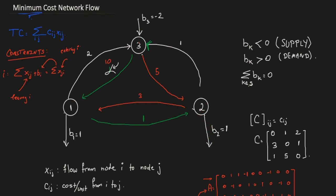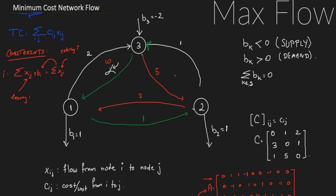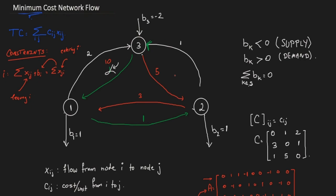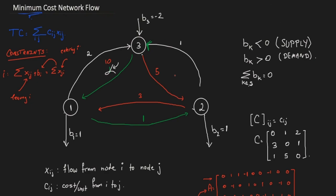Demanding nodes are also referred to as sinks — terminals one and two in this case — whereas terminal three, acting as a supplier, is referred to as the source terminal. Other types of network flow problems include max cut, nowhere-zero flow, and max flow min cut. Many algorithms in combinatorial optimization are dedicated to such problems, including the Ford-Fulkerson algorithm for maximum flow, and the Edmonds-Karp algorithm that runs in polynomial time.